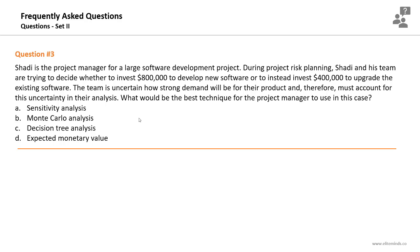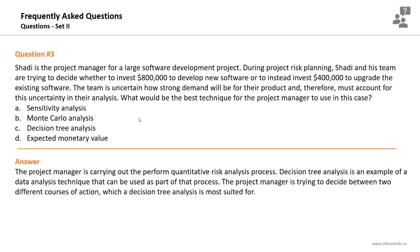The project manager wants to decide between investing $800,000 to develop new software or $400,000 to upgrade existing software, with uncertainty in both options. The best technique is decision tree analysis. The project manager is carrying out the perform quantitative risk analysis process, and decision tree analysis is a data analysis technique used as part of that process, most suited for deciding between two different courses of action.